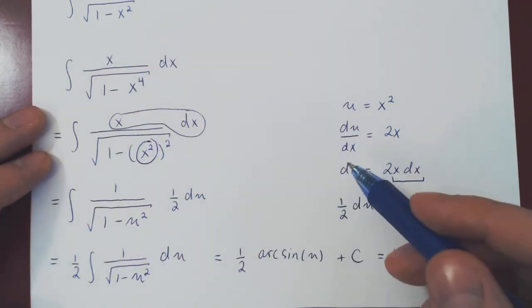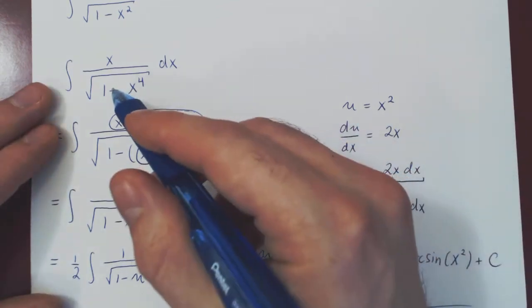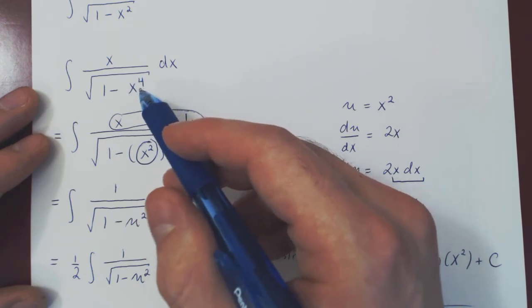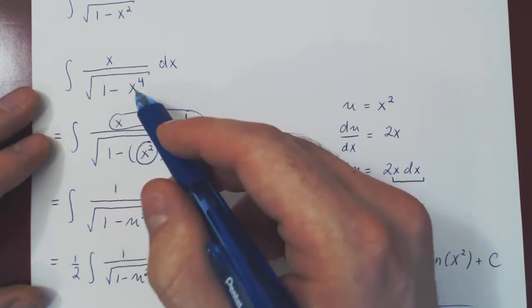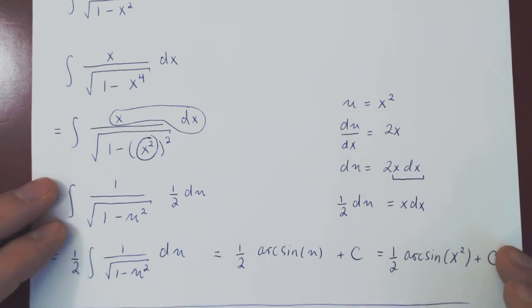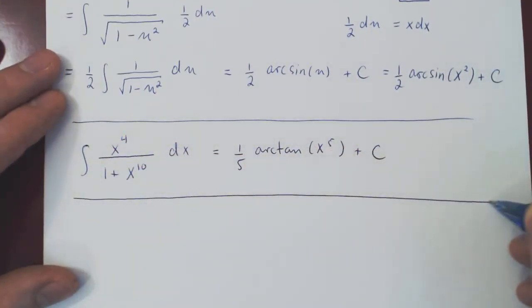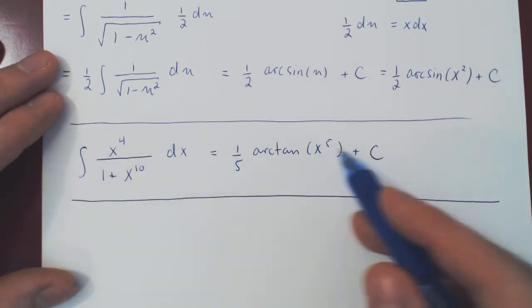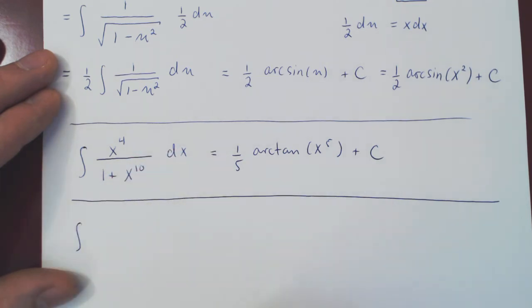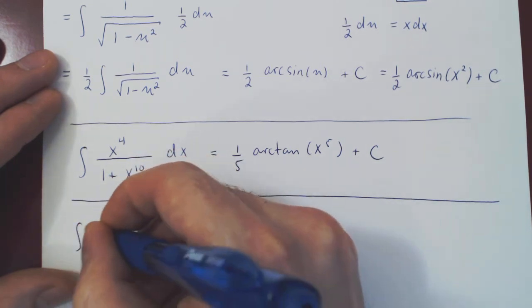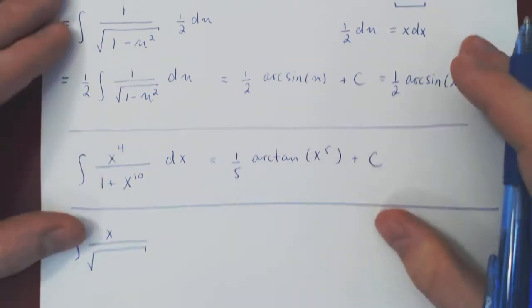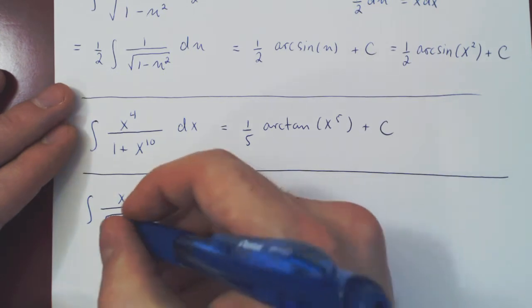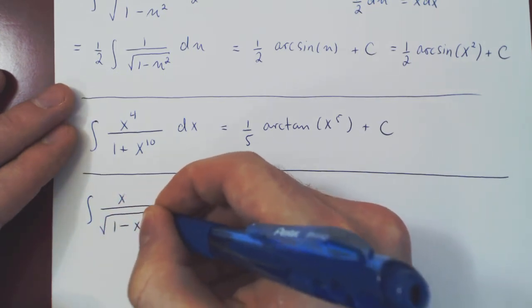One last short little comment just to show you how, again, a little change can really make a big difference. With the x to the 4, the u-sub was hiding. If it were an x to the 2, then the u-sub wouldn't be hiding. It would be quite apparent. But before you look at this one, make sure that you solve this problem. So hit pause, solve this problem. Then you can look at this one, which is a very simple u-substitution. So as I've said, instead of the 1 minus x to the 4, we'll simply go with the 1 minus x squared.